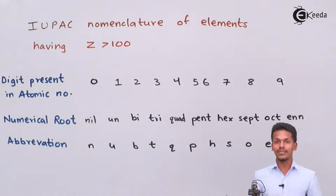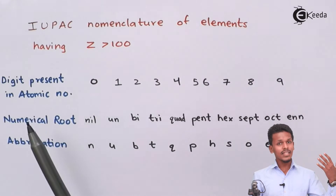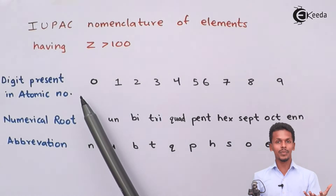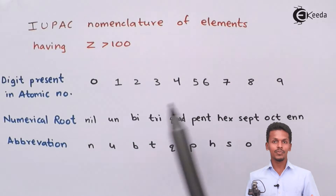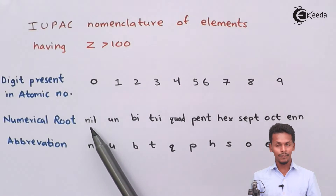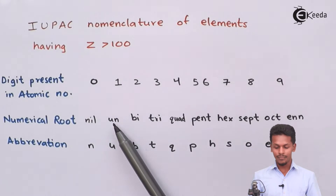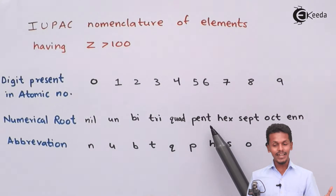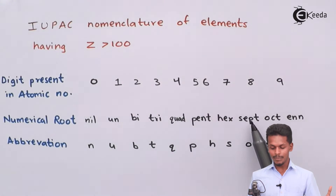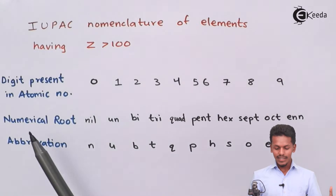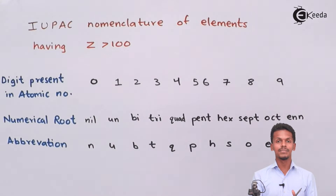For each digit present in the atomic number — 0 through 9 — there is a corresponding numerical root. For zero it is 'nil', for one it is 'un', for two it is 'bi', for three it is 'tri', for four it is 'quad', for five it is 'pent', for six it is 'hex', for seven it is 'sept', for eight it is 'oct', and for nine it is 'en'.